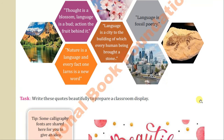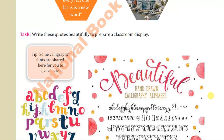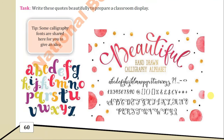This is another aspect of language. Some calligraphy fonts are shared here to give you an idea. A font means how the alphabets or the language is written. There are very different kinds of fonts, even in computers when you are typing. Similarly, some people are expert in the use of different kinds of fonts. One alphabet can be written in many different ways — this is called a font. You can also practice how to write beautifully in different kinds of fonts as another aspect of using the language.